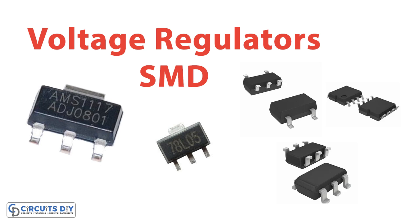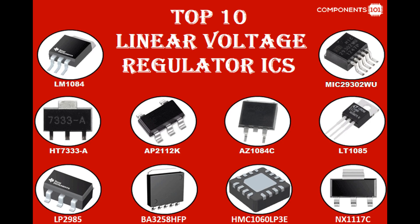The error amplifier is a critical component within a voltage regulator IC that compares the reference voltage with the actual output voltage and generates an error signal based on any difference between the two voltages. This error signal is then used to adjust the control element of the voltage regulator to bring the output voltage back into alignment with the reference voltage.